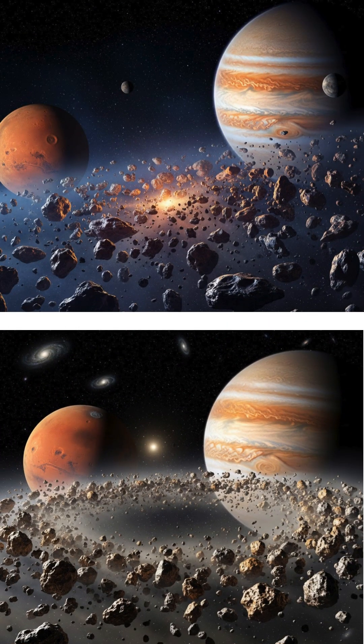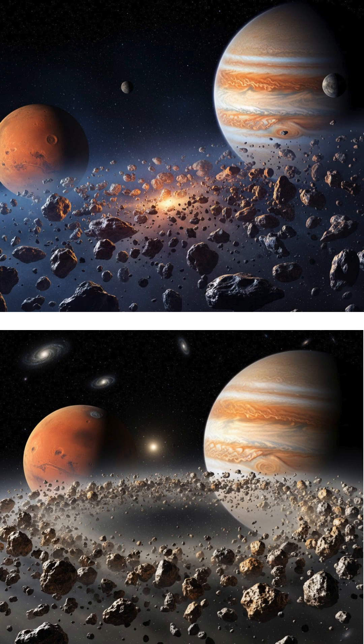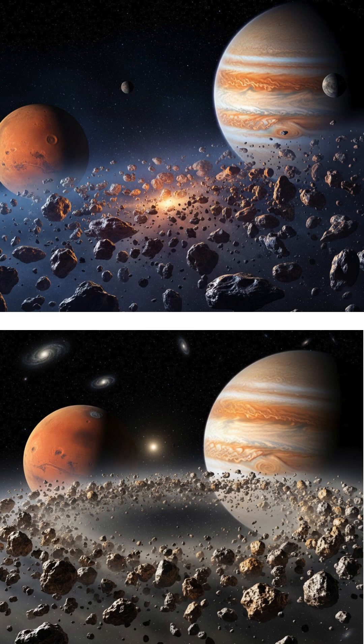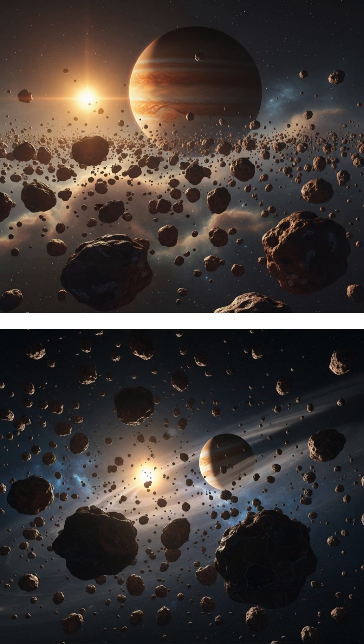Orbiting between Mars and Jupiter is the asteroid belt, a region populated by numerous irregularly shaped bodies composed of rock and metal. These asteroids are remnants from the solar system's early formation that never coalesced into a planet due to Jupiter's strong gravity.